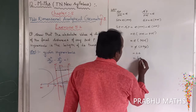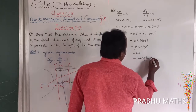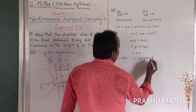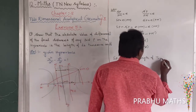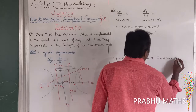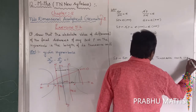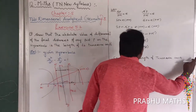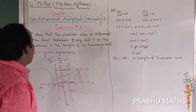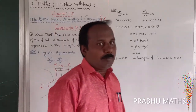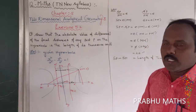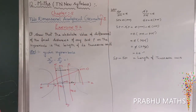That is equal to the length of the transverse axis. So SP minus S dash P is equal to the length of the transverse axis. That is the absolute value of the difference of the focal distances of any point P on the hyperbola is equal to 2A. The major axis distance is going to 2A. That is the same. Thank you.